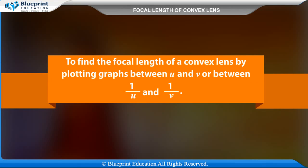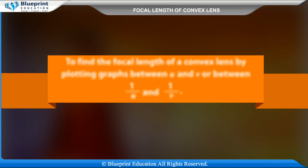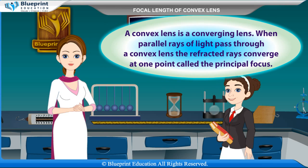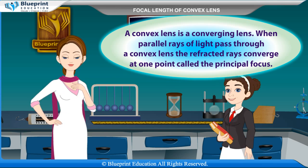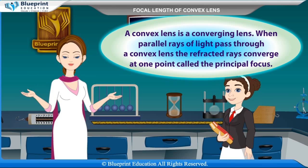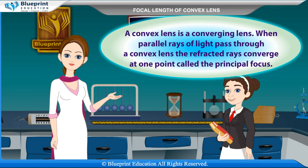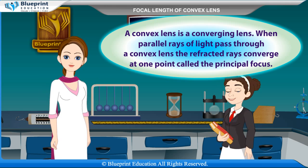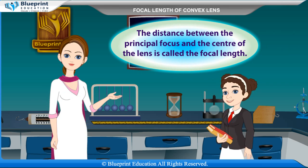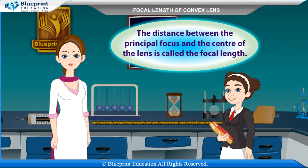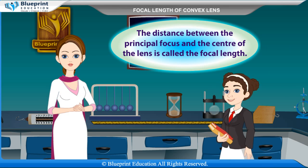Define the focal length of a convex lens by plotting graphs between U and V or between 1/U and 1/V. A convex lens is a converging lens. When parallel rays of light pass through a convex lens, the refracted rays converge at one point called the principal focus. The distance between the principal focus and the centre of the lens is called the focal length.